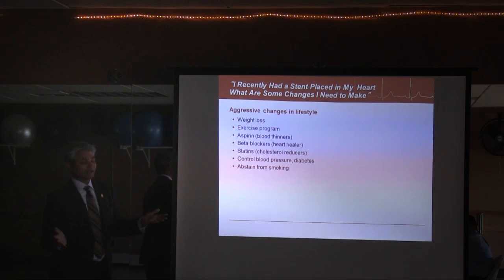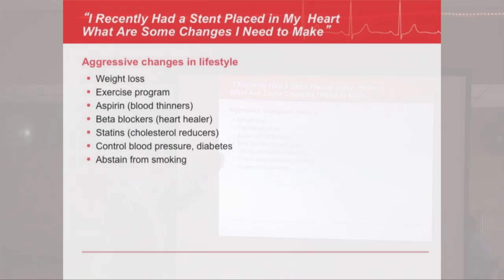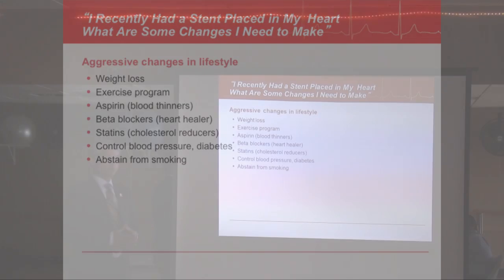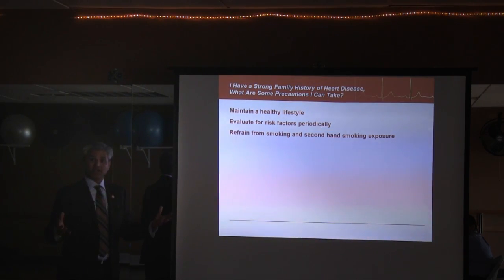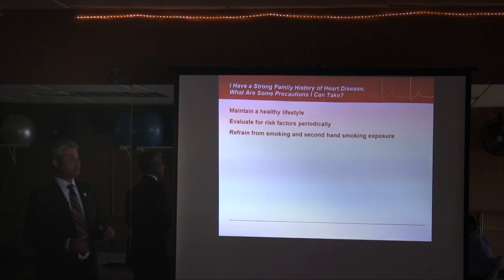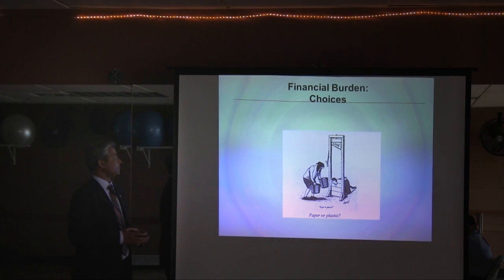Another question: 'I had a stent — what can I do?' This is secondary prevention — you've already had an event, so we try to prevent the next one. We recommend aggressive lifestyle changes, weight loss, exercise, and medications: aspirin, beta blockers, and statins, plus abstaining from smoking. If you have a strong family history of heart disease, maintain a healthy lifestyle, get risk factors evaluated periodically, and stay away from smoking.